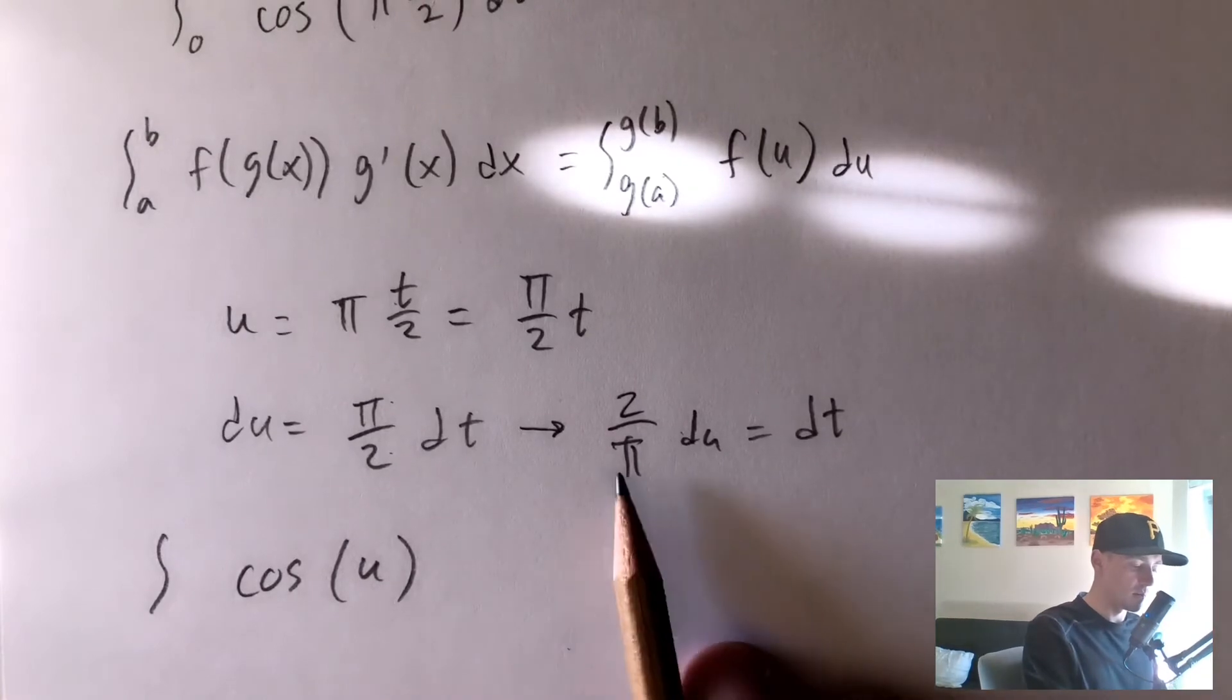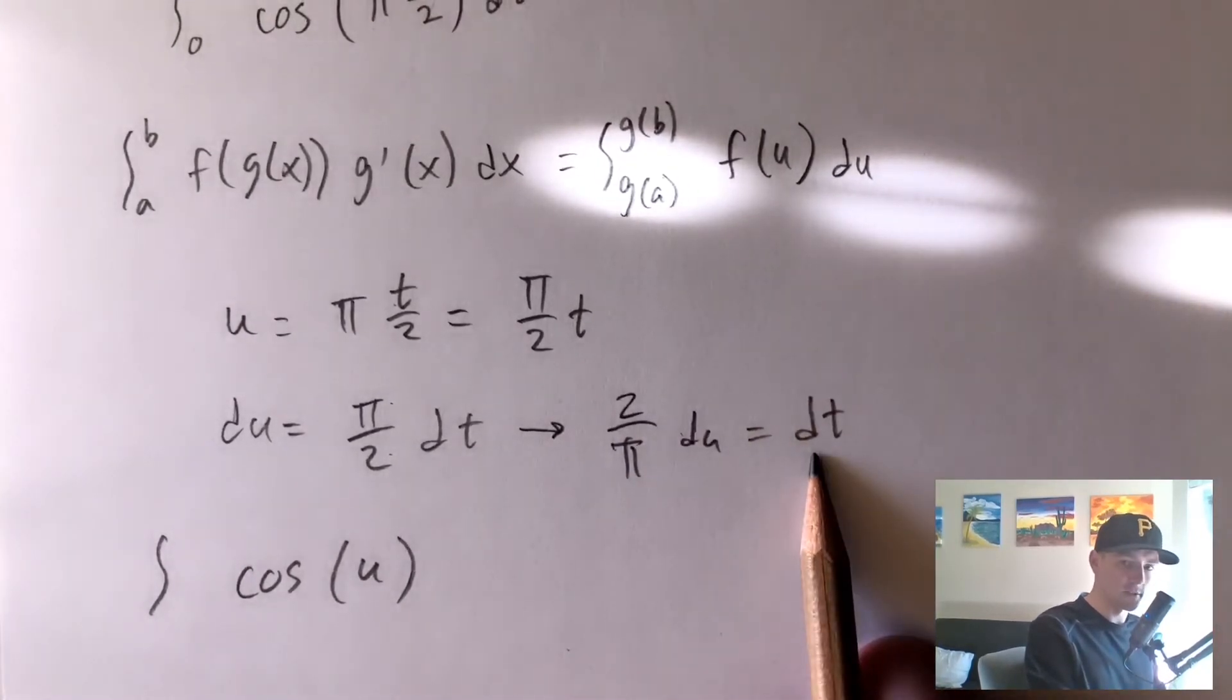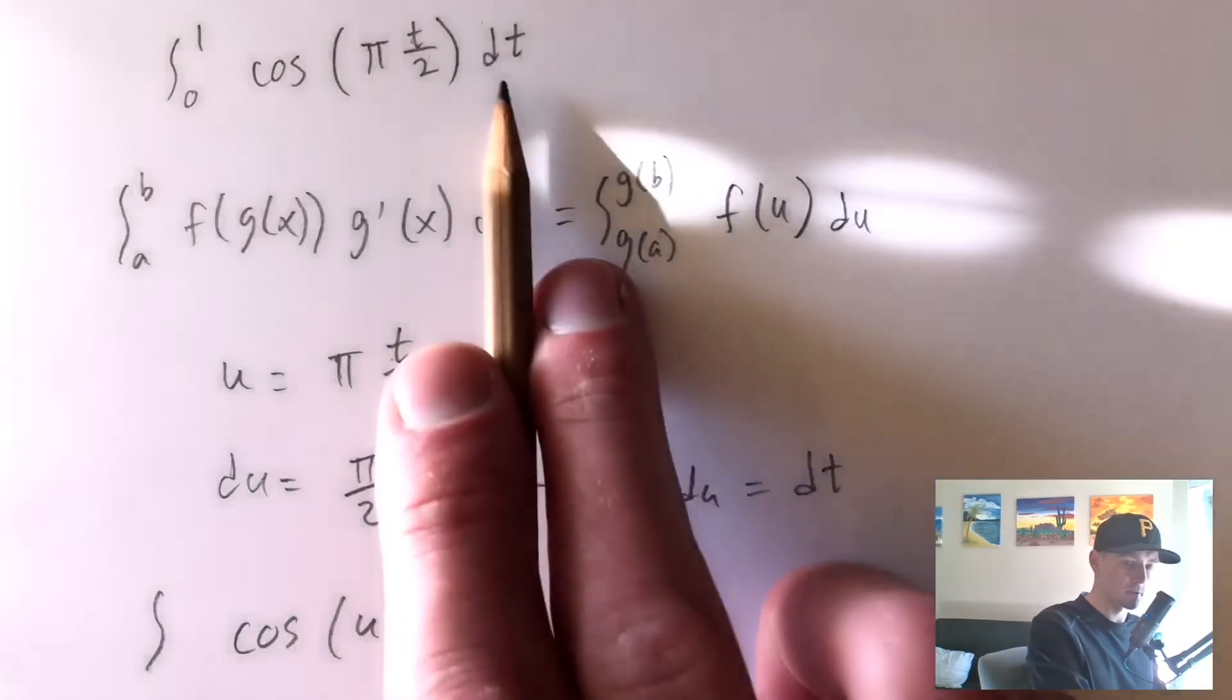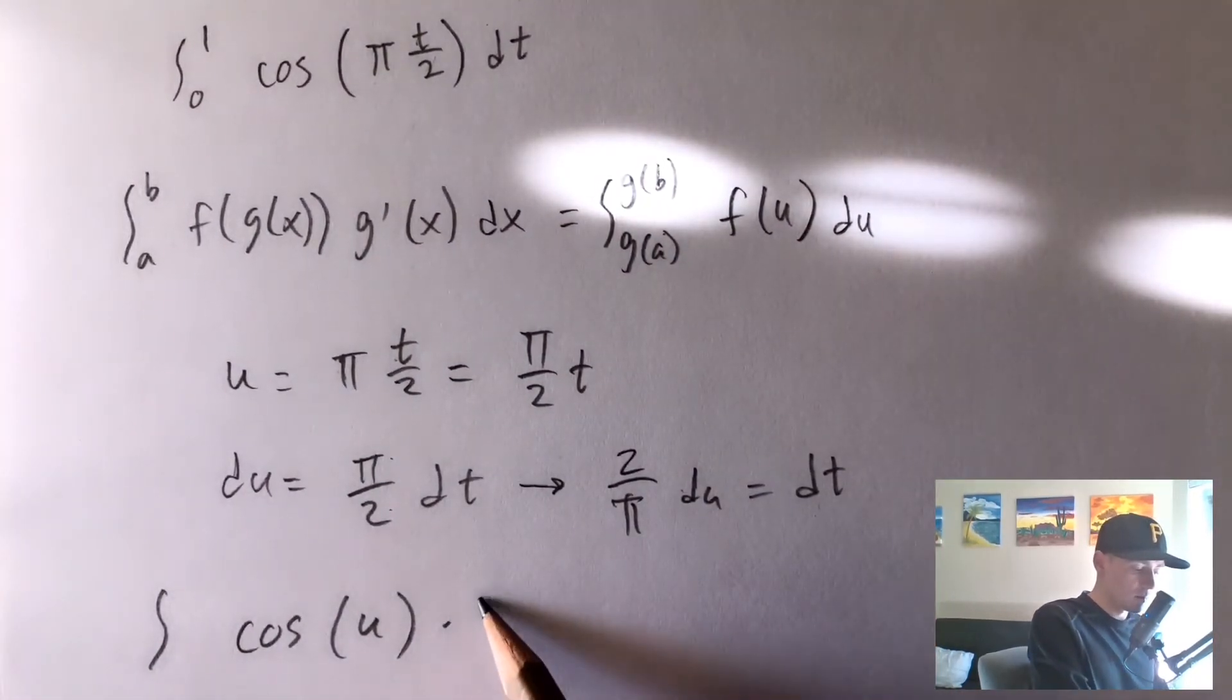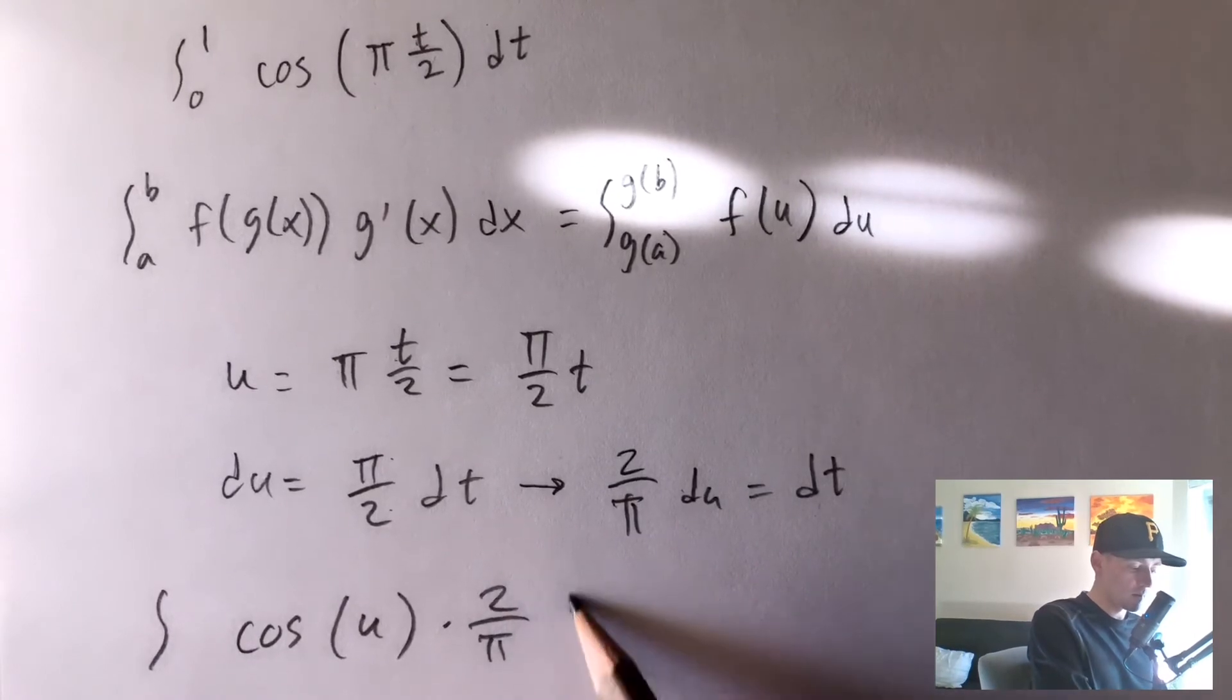So taking this whole thing here and replacing dt with that, back up to this original integral, that's going to give us this times 2 over pi times du.